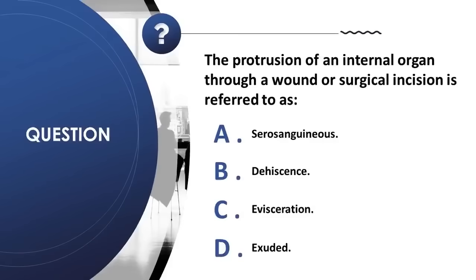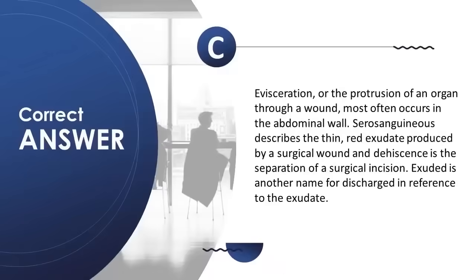Question 31: The protrusion of an internal organ through a wound or surgical incision is referred to as: A) serosanguineous, B) dehiscence, C) evisceration, D) exudate. Correct answer is C. Evisceration, or protrusion of an organ through a wound, most often occurs in the abdominal wall. Serosanguineous describes thin, red exudate from a surgical wound; dehiscence is the separation of a surgical incision; exudate is another name for discharge.